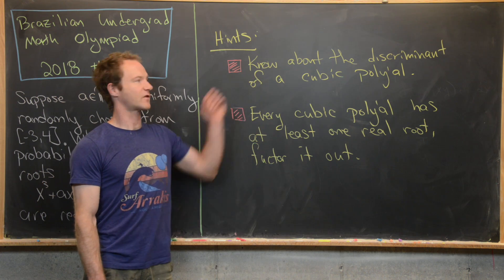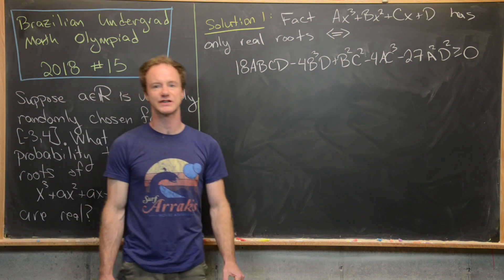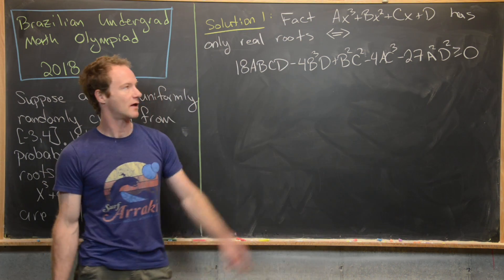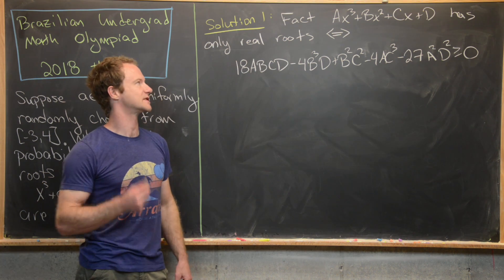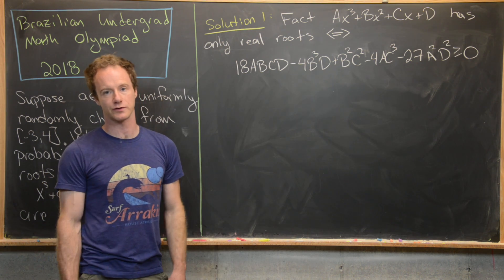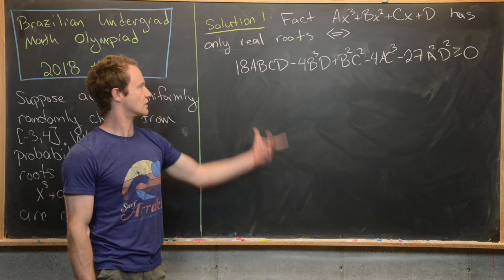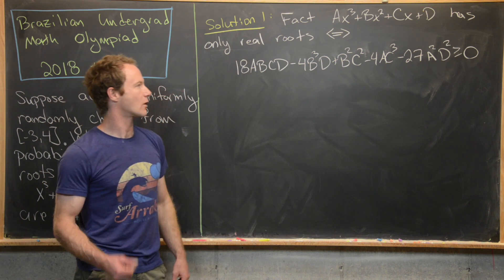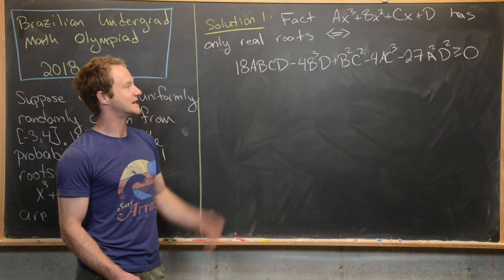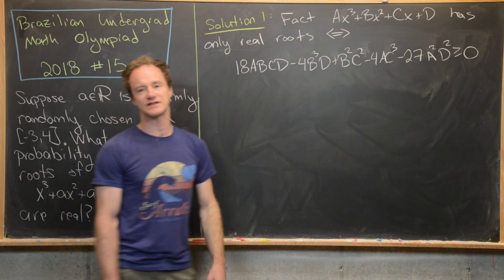Let's jump into the first solution. We start with a key fact about the discriminant of a cubic polynomial. Suppose we have a cubic A x cubed plus B x squared plus C x plus D. This polynomial has only real roots — in other words, no complex roots — if and only if the discriminant is greater than or equal to zero.